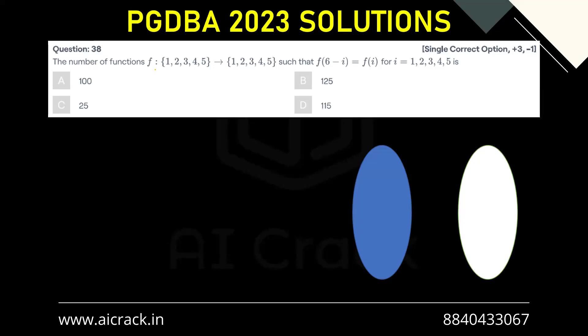Let's solve question number 38. The number of functions f from set A to set B, where set A is {1, 2, 3, 4, 5} and set B is also {1, 2, 3, 4, 5}, such that f(6-i) equals f(i) for i belongs to {1, 2, 3, 4, 5}.